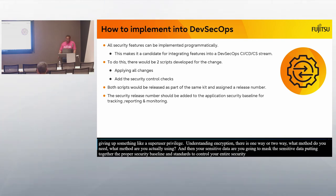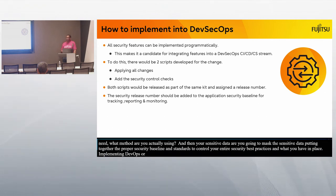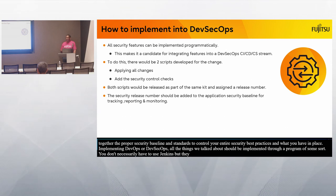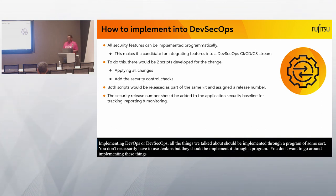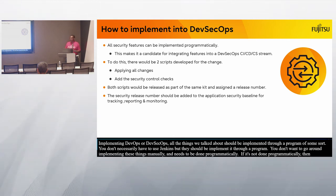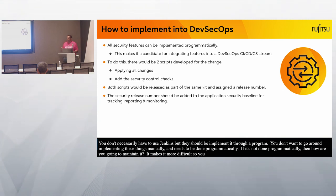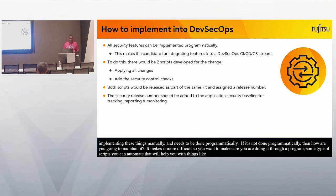Implementing DevOps or DevSecOps: all of these things should be implemented through a program of some sort. You don't necessarily have to use Jenkins, but they should be implemented programmatically — not manually. If it's not done programmatically, it's more difficult to maintain. Use scripts you can automate to apply changes and add new security checks as needed.